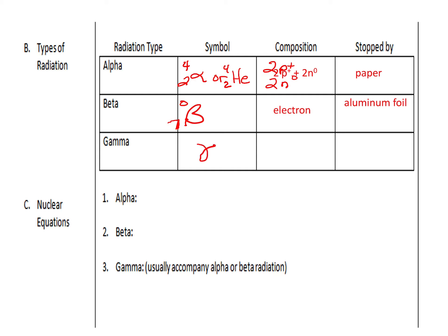A gamma ray is actually interesting because the symbol for gamma is like this, and it's a 0 and a 0. So there are no protons, and there is no mass. And so the composition of a gamma particle is actually energy. And it's the highest energy. So it's stopped by lead or concrete.